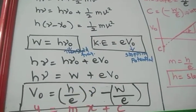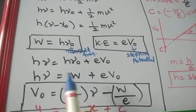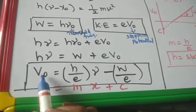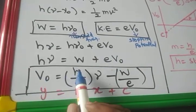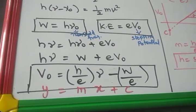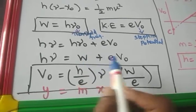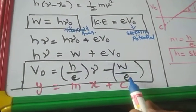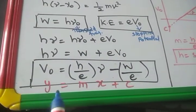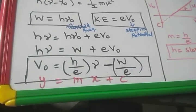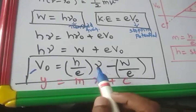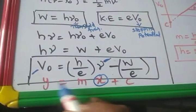So H-nu equals work function plus eV-naught. Bringing the work function to the left side and E to the denominator, stopping potential V-naught equals (H/E) times nu minus work function divided by E. This is equivalent to the straight-line equation Y equals MX plus C, where the incident frequency nu is X and stopping potential V-naught is Y.